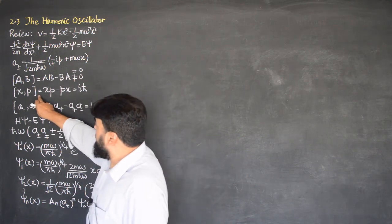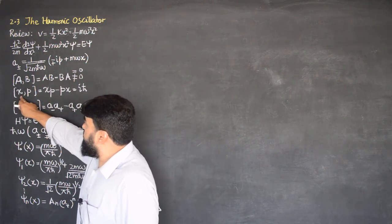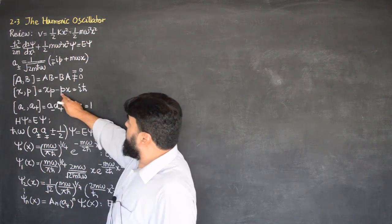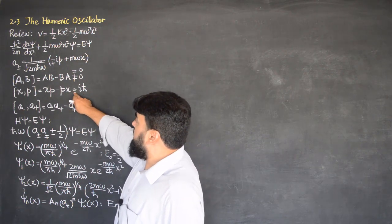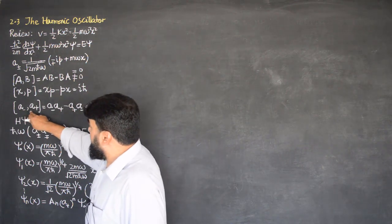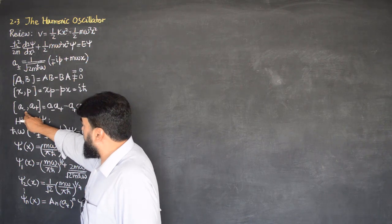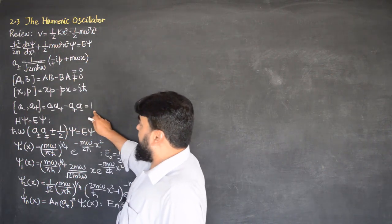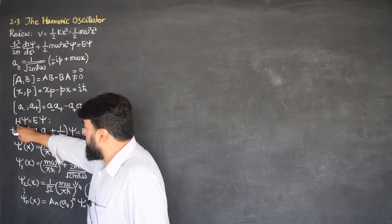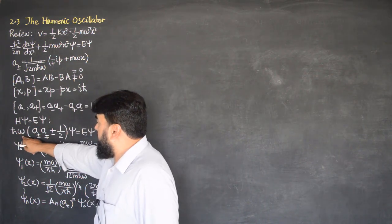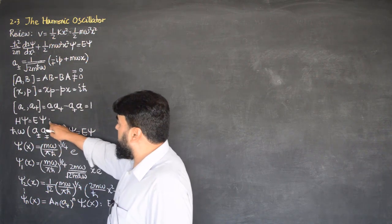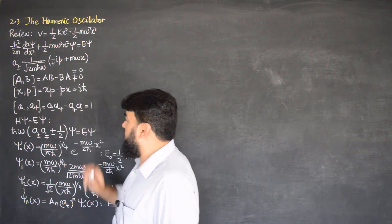During our derivation, we came across the position and momentum operators and found that they are non-commuting operators — their commutator is non-zero. We also computed the commutation relation for a- and a+, and it came out to be one.